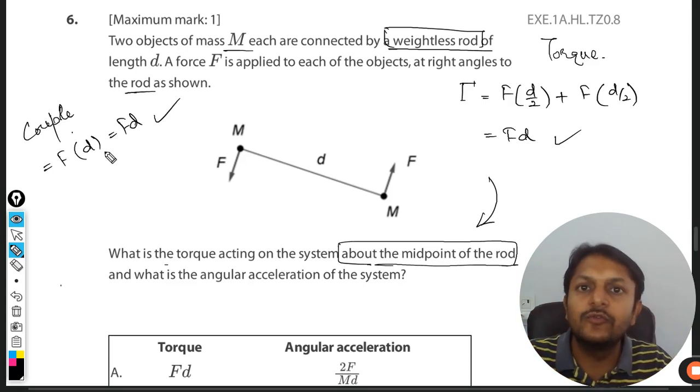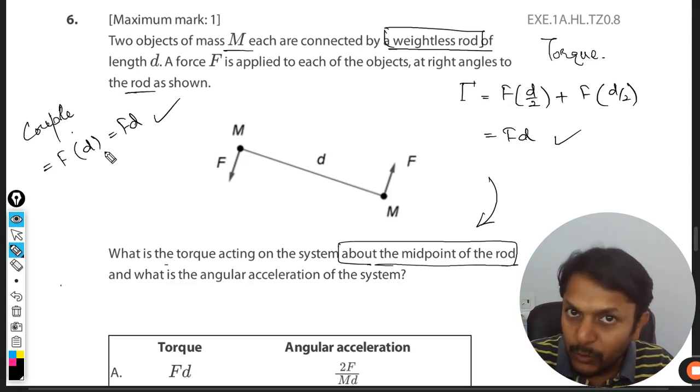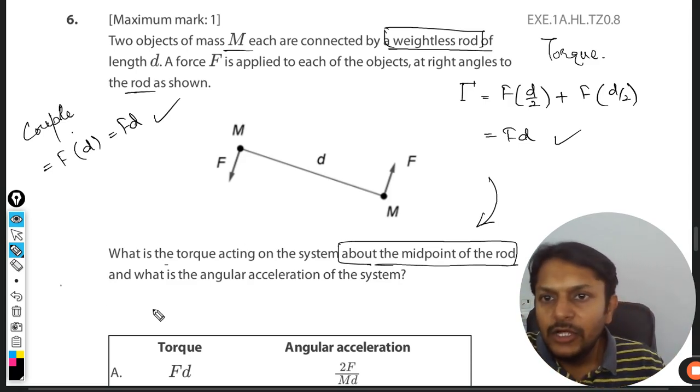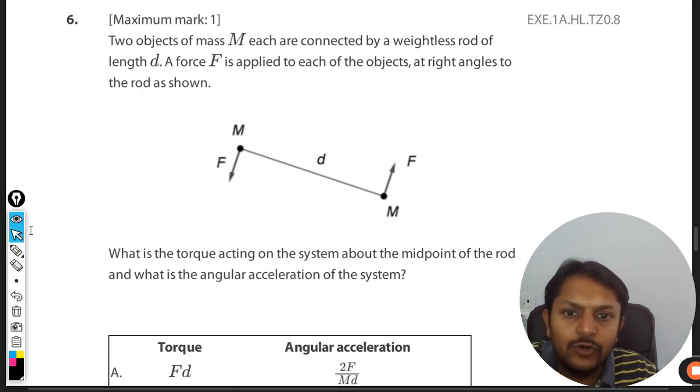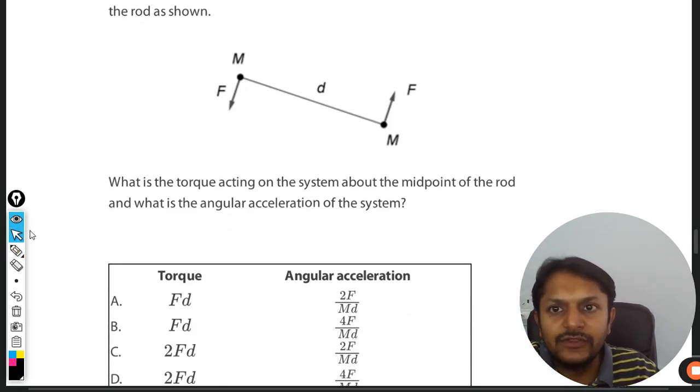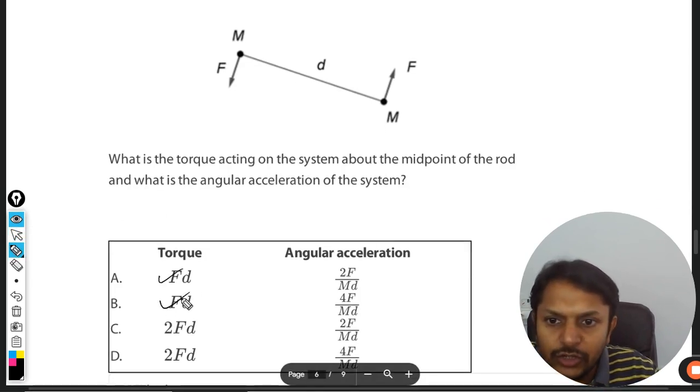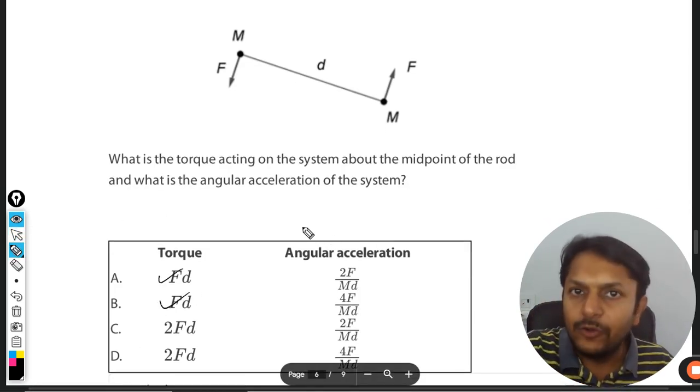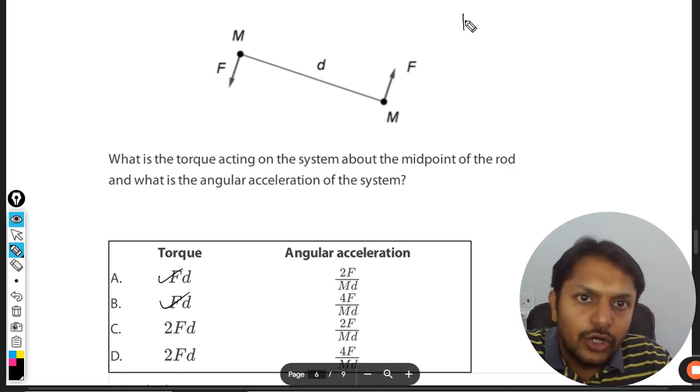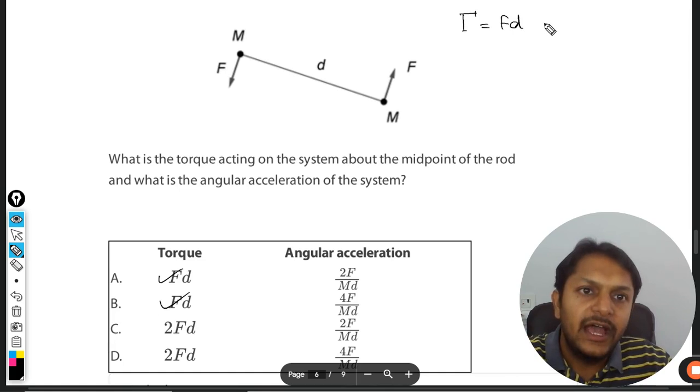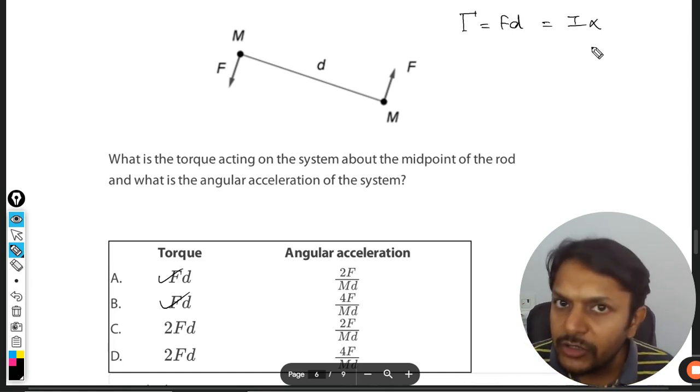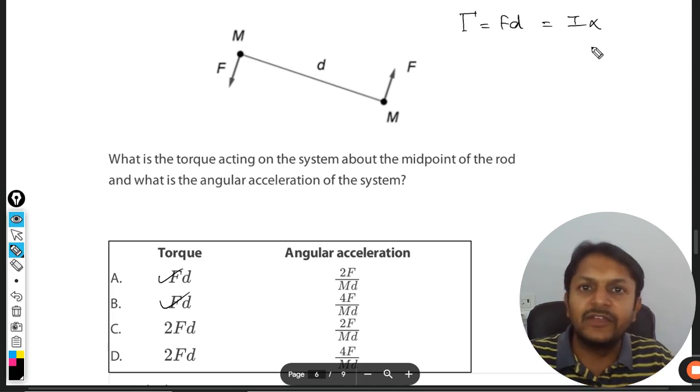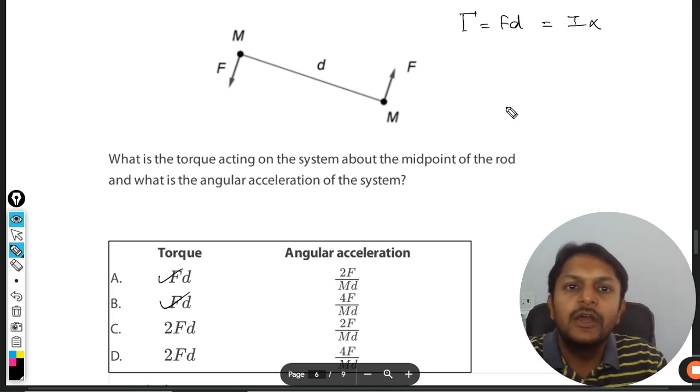Now moving to the next question, what is the angular acceleration of the system? So clearly the torque is this, we want to find the angular acceleration. So torque is F into d, and torque will be equal to I alpha. So we want to find the moment of inertia now, and with the help of that we can find the alpha anytime, no problem.